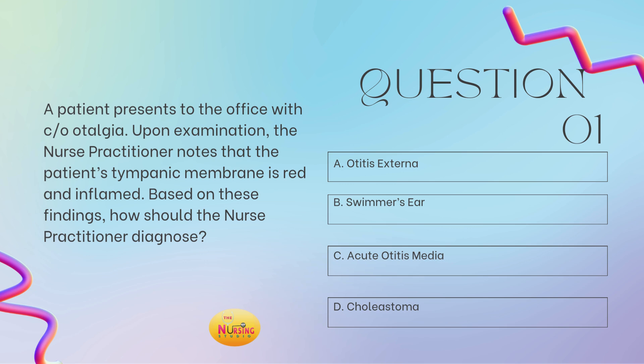Question number one states: a patient presents to the office with complaints of otalgia. Upon examination, the nurse practitioner notes that the patient's tympanic membrane is red and inflamed. Based on these findings, how should the nurse practitioner diagnose? Is it A, otitis externa; B, swimmer's ear; C, acute otitis media; or D, cholesteatoma? Take a moment and tell me what you got in the comments.